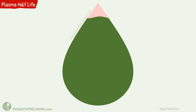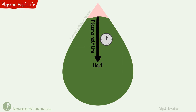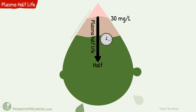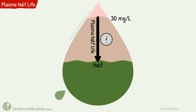What is plasma half-life? Plasma half-life is the time taken for drug concentration to fall to half of its initial value. For example, let's say the initial concentration of a drug is 30 mg per litre. Now due to its elimination, its concentration gradually decreases. The time required for it to reach 15 mg per litre, which is half of 30 mg per litre, is plasma half-life.